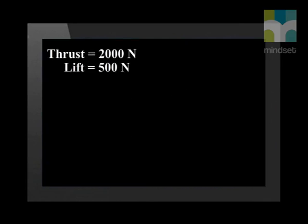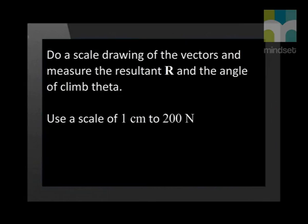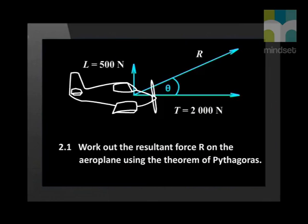The thrust vector is 2000 newtons and the lift vector is 500 newtons. Do a scale drawing of the vectors and measure the resultant R and the angle of climb theta. In your drawing, use a scale of 1 cm to 200 newtons. You'll need a protractor to measure the angle theta.